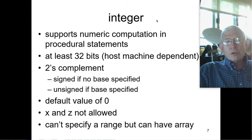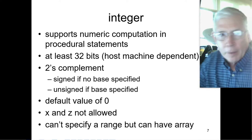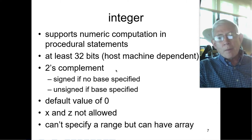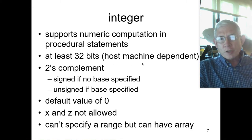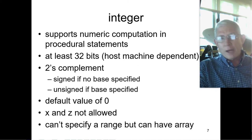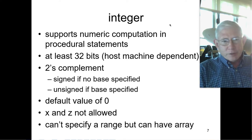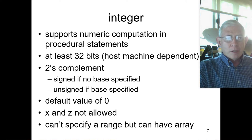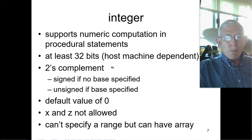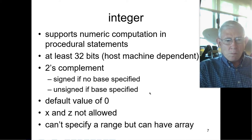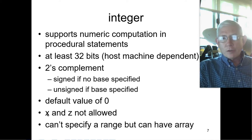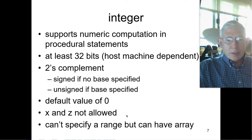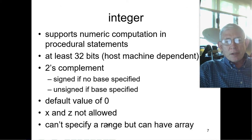Integer: when you want to do most numeric computations, this is the type you'll use, or you'll use a real. These have to be the left side in a procedural statement. By definition they're 32 bits, though this is a little bit host machine dependent. They can be unsigned or signed, but generally they're two's complement, and they have a default value of zero. You cannot have them as data type unknown, and you cannot have them as disconnected. You can have an array of integers, but you cannot specify a part of an integer.